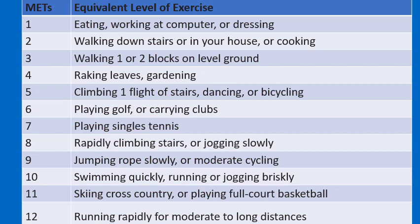Now coming to metabolic equivalents. Metabolic equivalent of 1 is eating, working, and dressing. Metabolic equivalent of 5 is being able to climb one flight of stairs, dance, and do bicycling. Metabolic equivalent of 7 is playing singles tennis. Metabolic equivalent of 10 is swimming quickly. Metabolic equivalent of 12 is running moderate to long distances. When a patient is able to climb one flight of stairs, the metabolic equivalent capacity is more than 5.